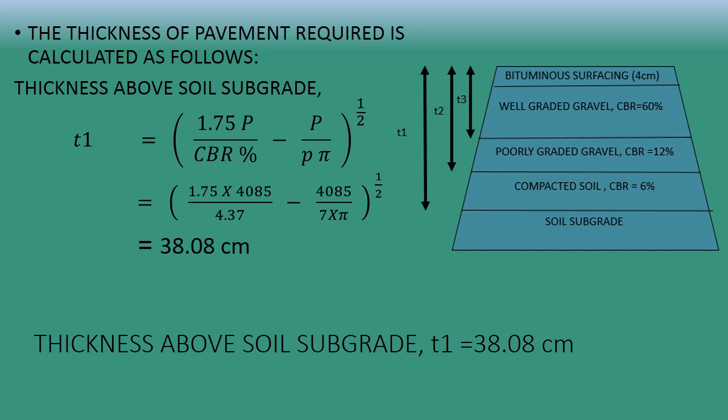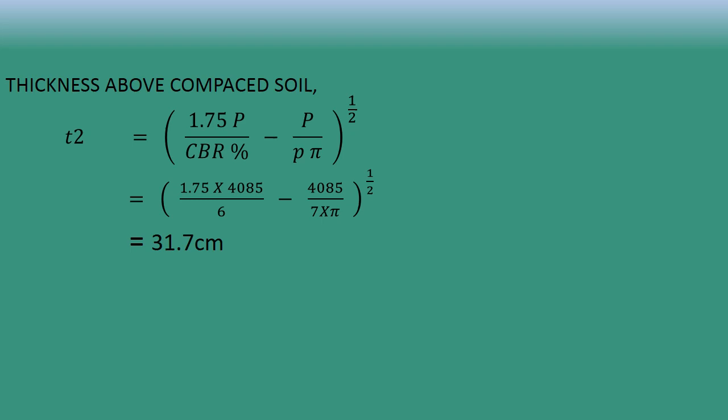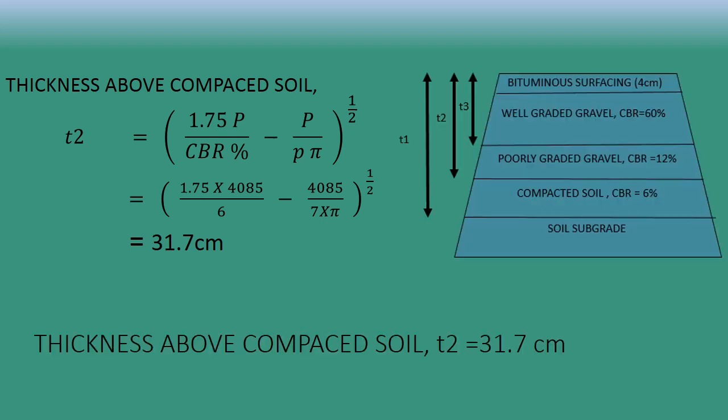The next step is finding T2, the total thickness above the compacted soil. Using the same formula with the CBR value of compacted soil, which is 6%, and substituting all values, we get T2 = 31.7 cm. This is the total thickness of layers above the compacted soil.